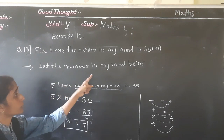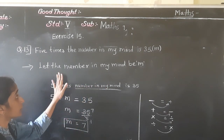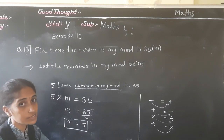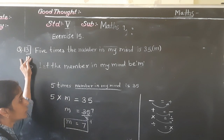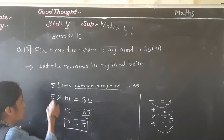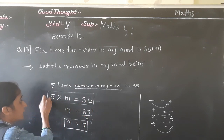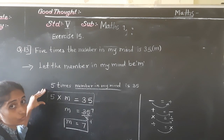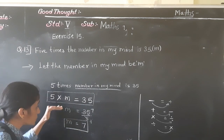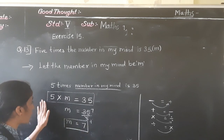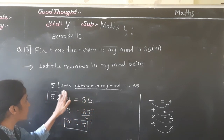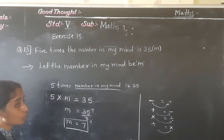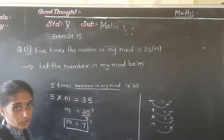So the number in my mind is 7. For question 13 we had to create the equation, and for question 17 we used that same equation and solved it. I have shown both in one summary. So I am not going to explain from the 17th example separately.